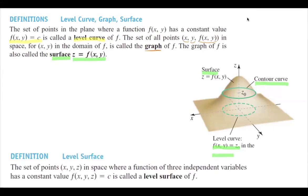Now, if you have a function in three free variables, we define this by setting the function equal to a fixed value like c, which creates something we call the level surface of f. So even though you are in four-dimensional space, you can visualize this object using level surfaces in three dimensions.